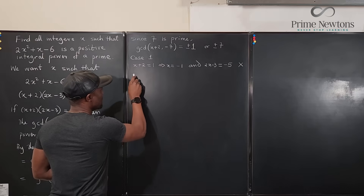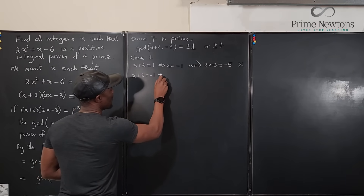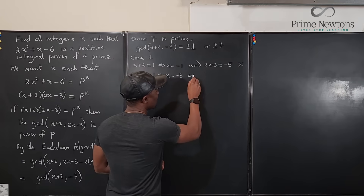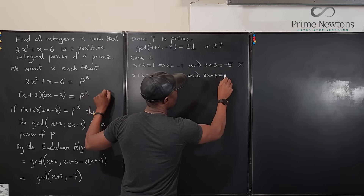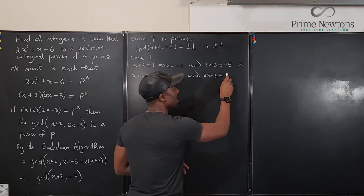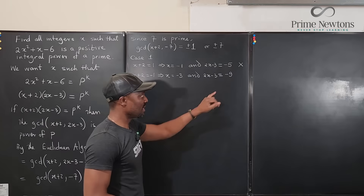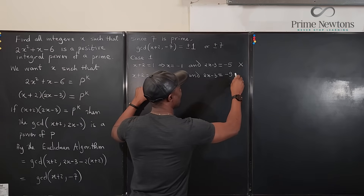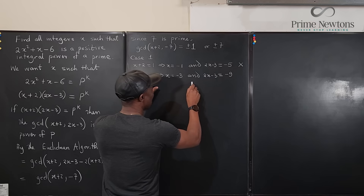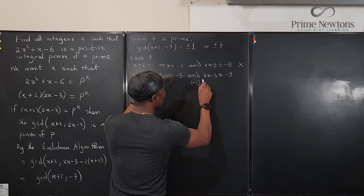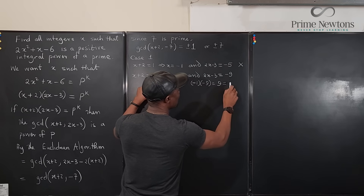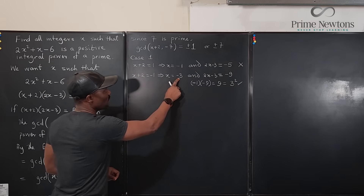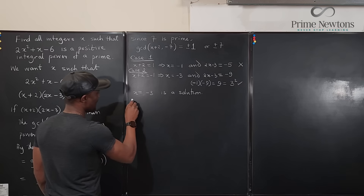Case 2: x+2 = −1, which implies x = −3. Then 2x−3 = −6−3 = −9. Negative 9 is −3 squared, and (−1)×(−9) = 9 = 3². That satisfies our condition. So x = −3 is a solution.